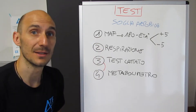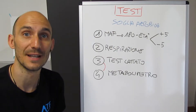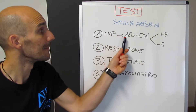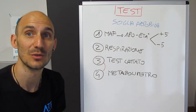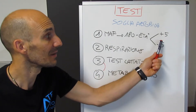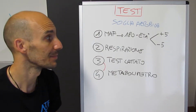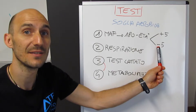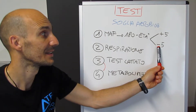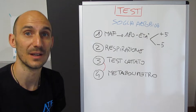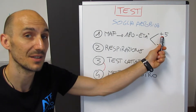Il primo è il metodo MAF, tratto dal libro nuovo uscito di Kilian Johnson e Steve House. In pratica dovete arrivare a questo numero che è calcolato partendo da 180, meno la vostra età. C'è una variante: se uscite da un periodo di fermo, da un infortunio, o da allenamenti non continuativi, dovete ulteriormente togliere 5 battiti.